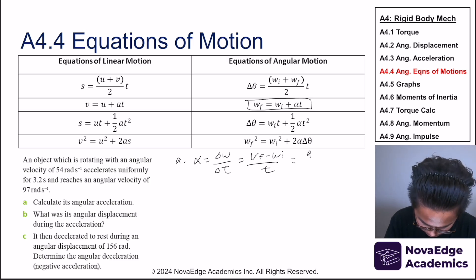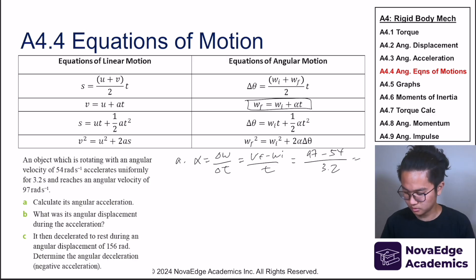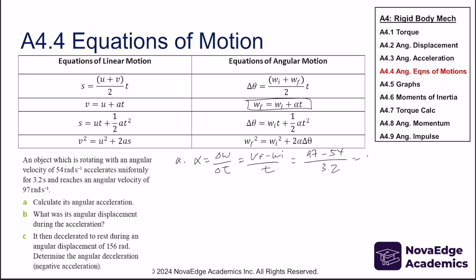Using angular acceleration equals change in angular velocity over change in time: (97 − 54) divided by 3.2 seconds.